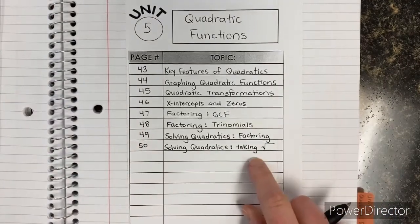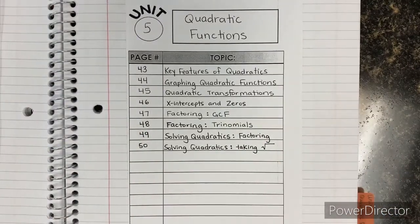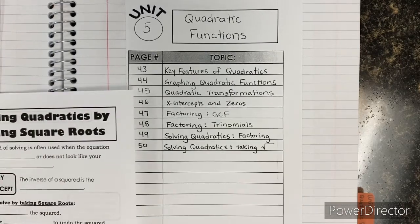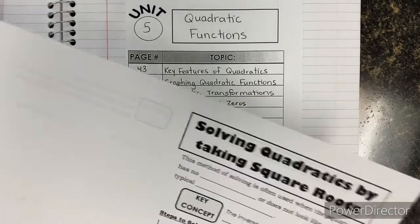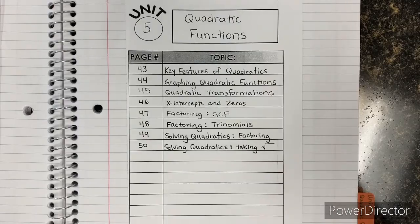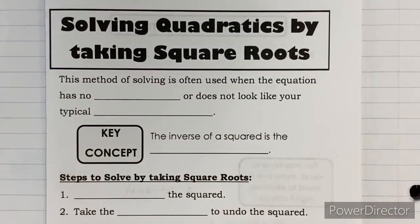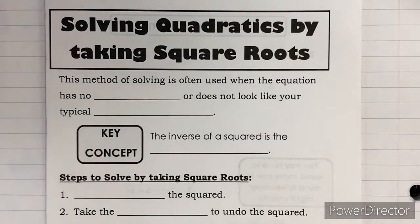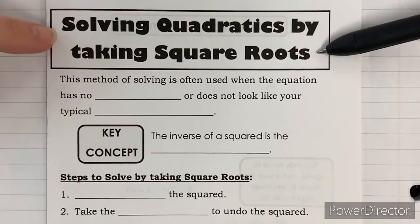So we can abbreviate that and use the square root symbol. This is just a different method you can use to solve quadratics — same goal. Once you write that down, you'll need to take the set of notes, fold them, and tape them down on page 50. Now that our notes are taped in, the topic of today is solving quadratics by taking square roots.